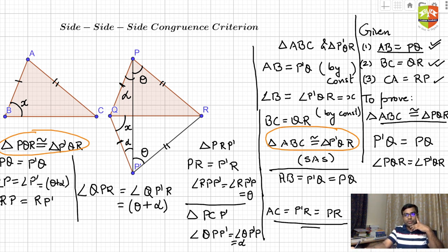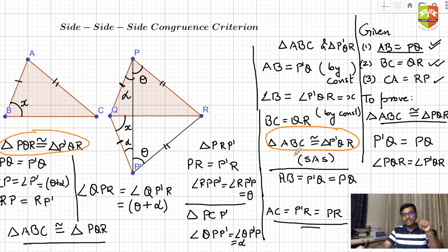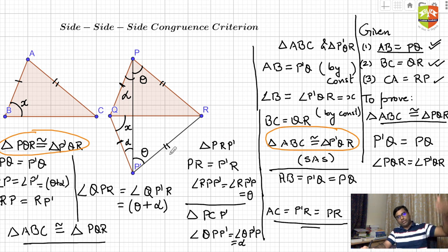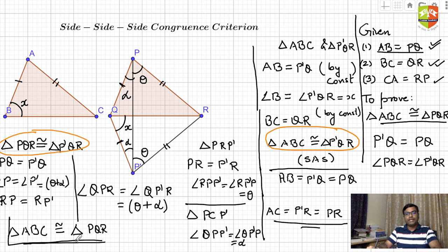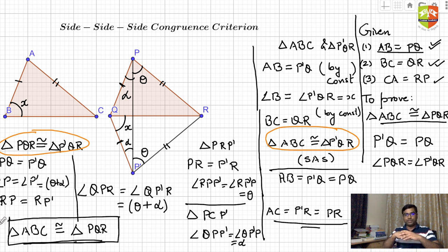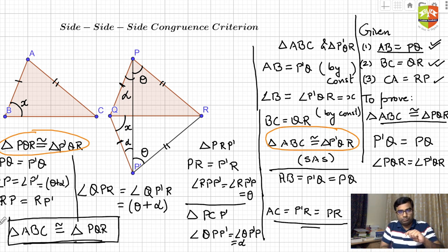Since triangle ABC is congruent to triangle P'QR, and triangle P'QR is congruent to triangle PQR, by transitivity triangle ABC is congruent to triangle PQR. This achieves our end objective: we have proved that if three corresponding sides of two triangles are equal, the triangles are congruent — and hence all corresponding angles are also equal.